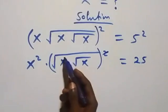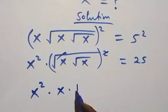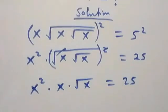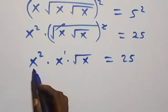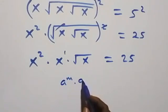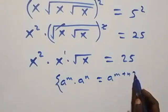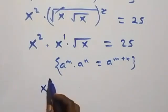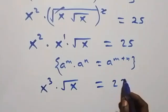The square cancels the square root here, giving us x squared times x. Then times root x equals 25 on this side. Using the rule that a raised to power m times a raised to power n is a raised to power m plus n, we can combine the powers and have x raised to power 3 times root x equals 25.